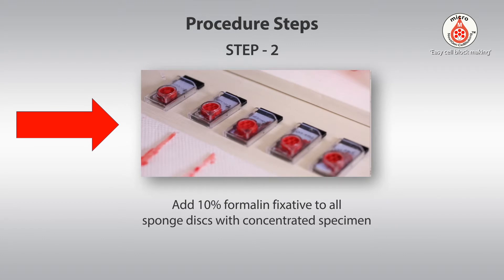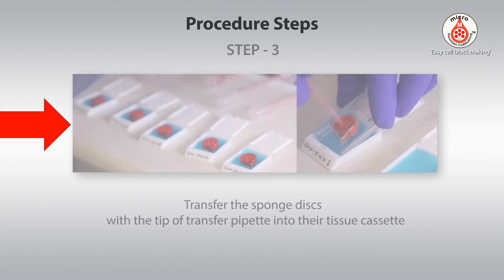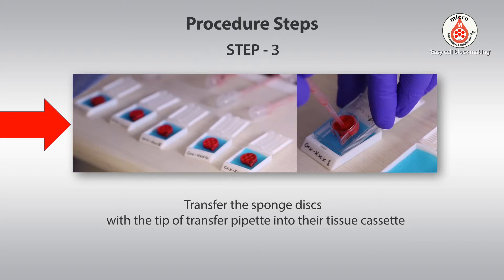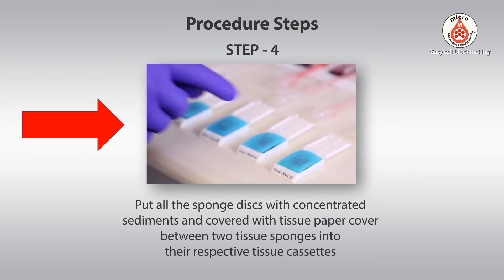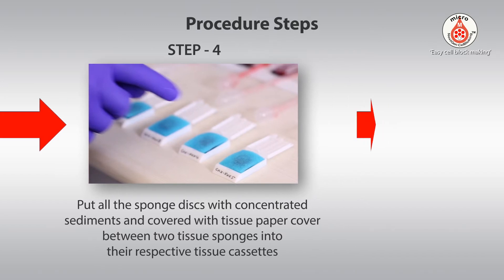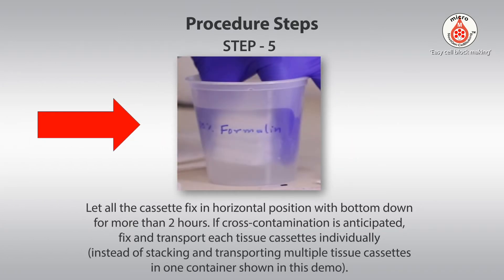Step 2: Dislodge the respective sponge disks with concentrated specimen into the respective tissue cassettes. Add 10% formalin fixative to all sponge disks with concentrated specimen. Step 3: Transfer the sponge disks with the tip of the transfer pipette into their tissue cassette. Step 4: Put all the sponge disks with concentrated sediments, covered with tissue paper cover, between two tissue sponges into their respective tissue cassettes. Step 5: Let all cassettes fix in horizontal position with bottom down for more than two hours. If cross-contamination is anticipated, fix and transport each tissue cassette individually instead of stacking and transporting multiple tissue cassettes in one container, as shown in this demo.